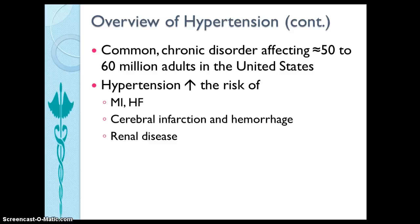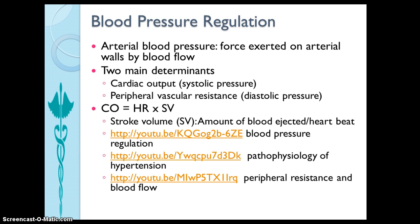Blood pressure reflects the force exerted on arterial walls by blood flow, and blood pressure normally remains constant because of homeostasis, which adjusts blood flow to meet tissue needs. There are two major determinants of arterial blood pressure: cardiac output and peripheral vascular resistance.